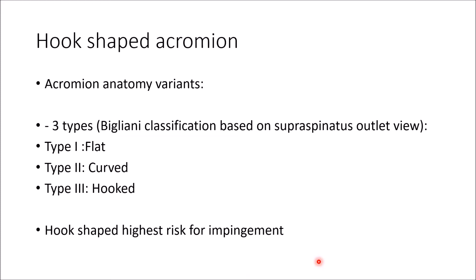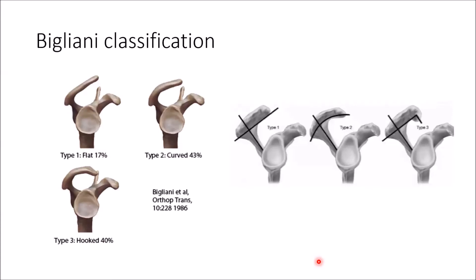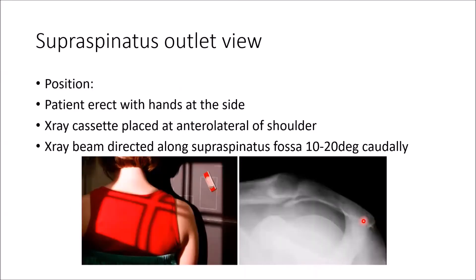For hook-shaped acromion, Bigliani classifies them into three types: type one (flat), type two (curved), and type three (hook), based on the supraspinatus outlet view X-ray. The hook shape is at the highest risk for impingement. The supraspinatus outlet view positioning has the cassette on the anterolateral aspect of the shoulder with the beam directed caudally about 10 to 20 degrees. In this view, you can clearly see the different acromion shapes.